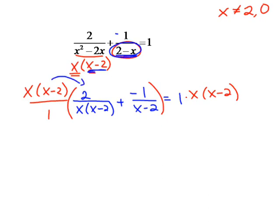We distribute to the first one. The denominator completely cancels, and so we're left with just 2. When I distribute it to the second fraction, just the x minus 2's cancel. I'm left with x times negative 1. So minus x equals,